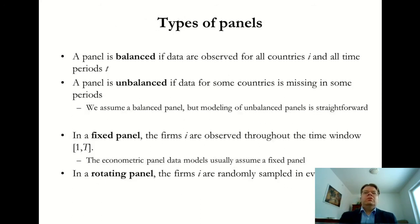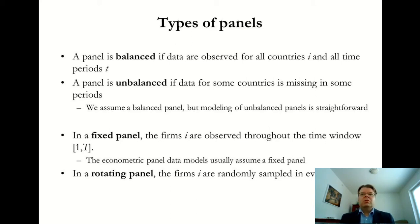A couple of conceptual points before I go to the more empirical examples. Panel data may be balanced — it's called balanced if all countries or firms are observed over all time periods. But very often we have some gaps in our dataset, giving us a so-called unbalanced panel.